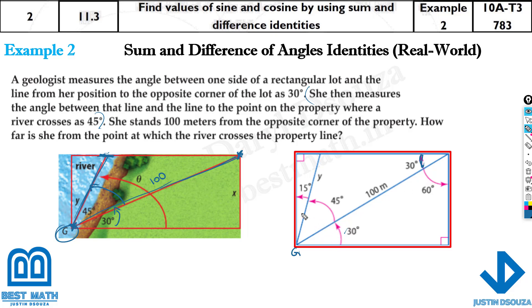Now, if this is 30, so then this entire thing is 60. But they have told us this is 45, so remaining is 15. So we have just measured all the angles. And this is 100. So in order to find this, we can use trigonometry, right?